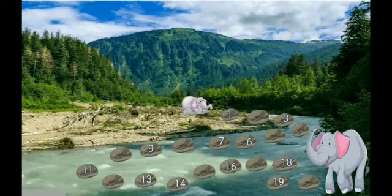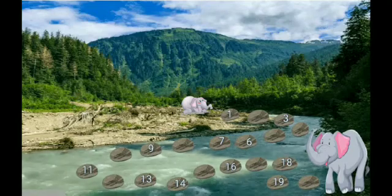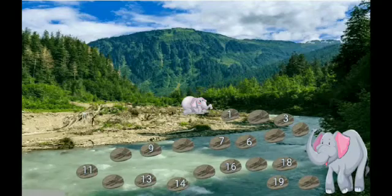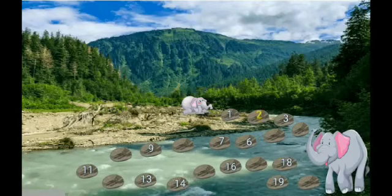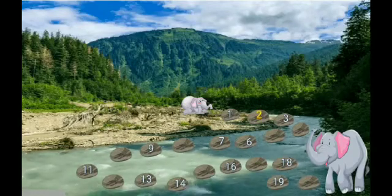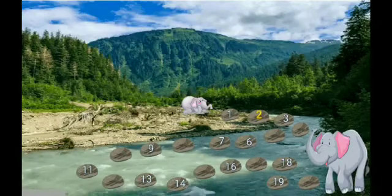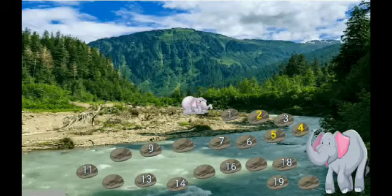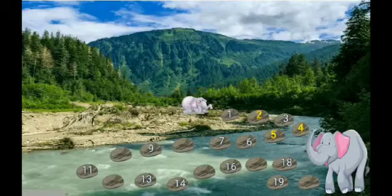Now see, one is there. Which number is missing? You need to find out. Baby Elephant said, 'Mama, I think number two.' Yes! Then three is there. Now which number is missing? Four. Then five, six, seven. Which number is missing?